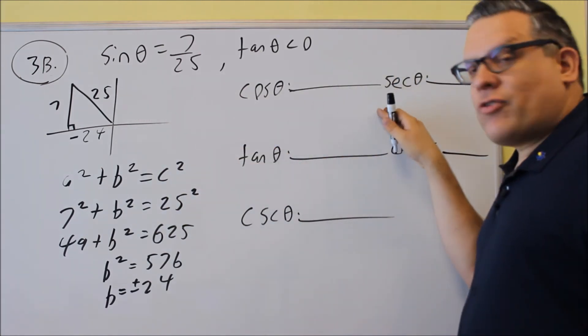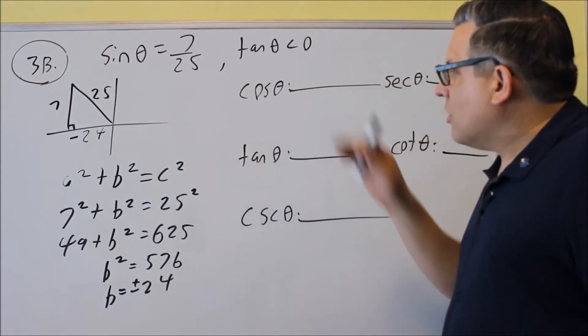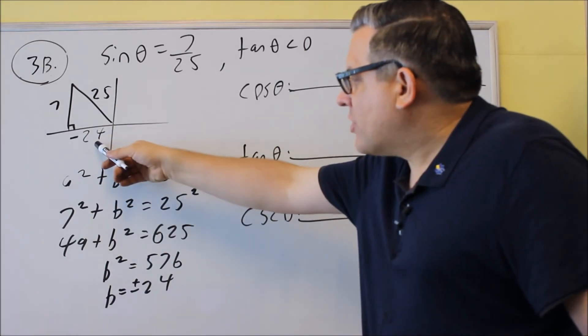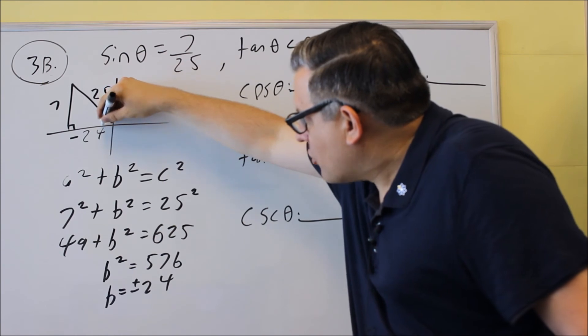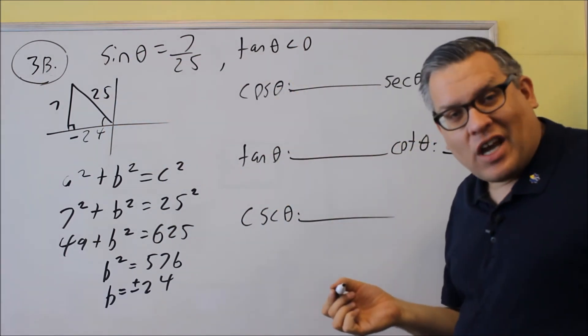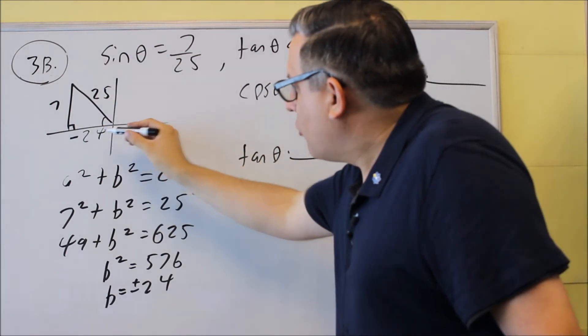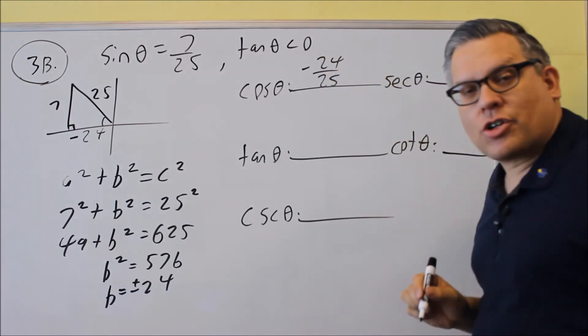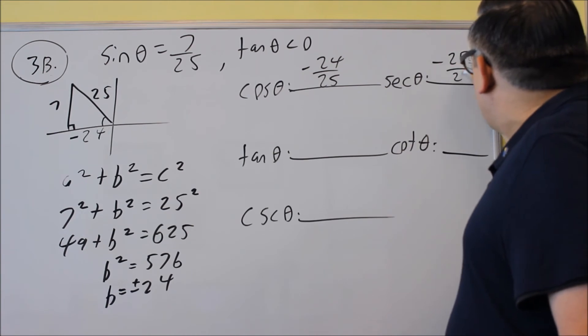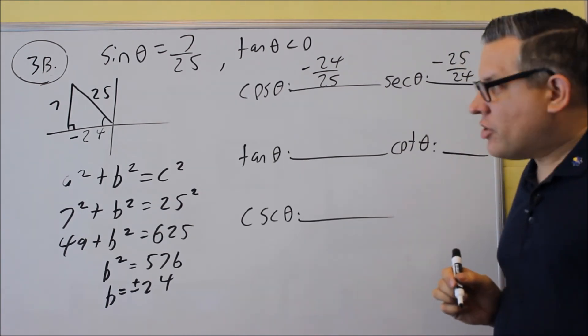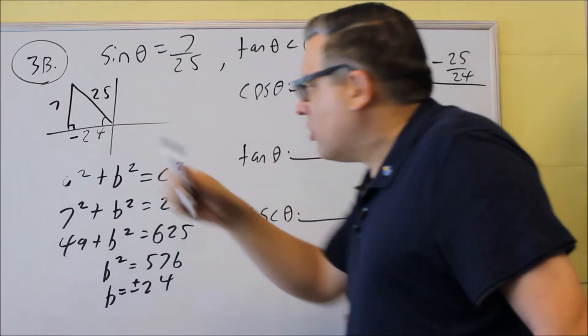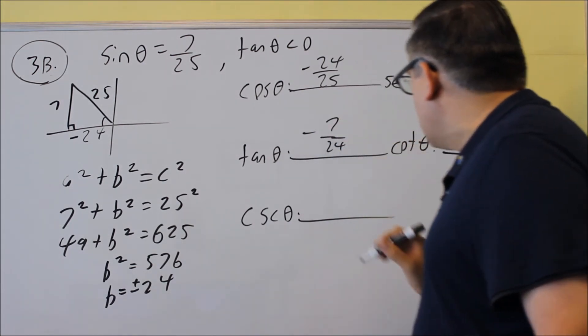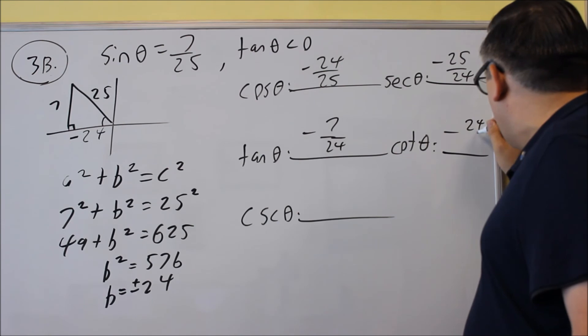Now we're going to use the definitions to fill the rest of these in. So cosine is adjacent over hypotenuse. Adjacent side would be here because this angle again is always measured from the closest x-axis. So your angle is there, which means you get negative twenty-four over twenty-five is your cosine. If you flip that, negative twenty-five over twenty-four. Next you're going to do tangent. Tangent is opposite over adjacent. Negative seven twenty-fourths. This would be negative twenty-four sevenths.